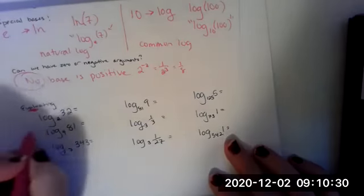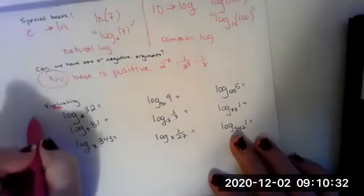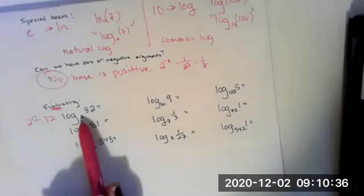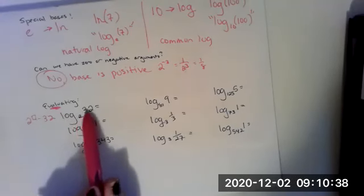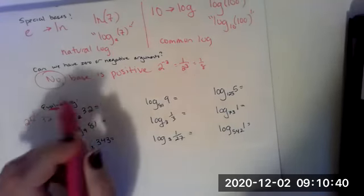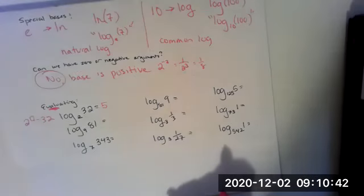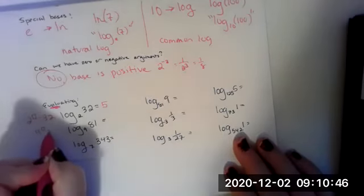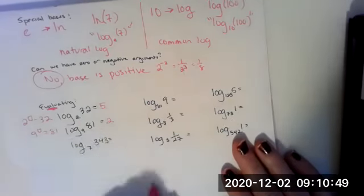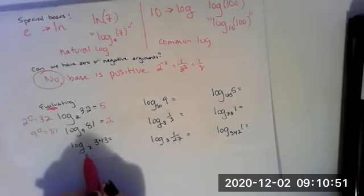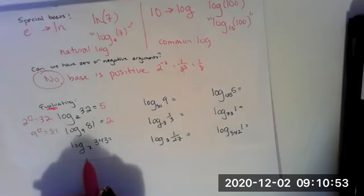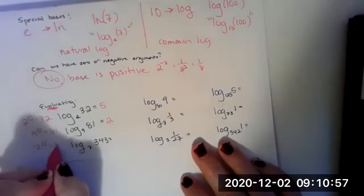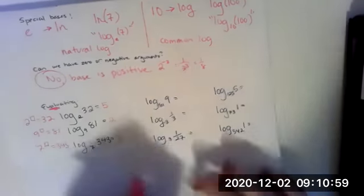Log base two of 32. One way to think about it is two to the what is 32. What power, what exponent do you raise two to, to get the argument of 32? It would be five. Log base nine of 81. Nine to the what equals 81. Well, that's two. Log base seven of 343. What do you raise seven to, to get 343? Three.